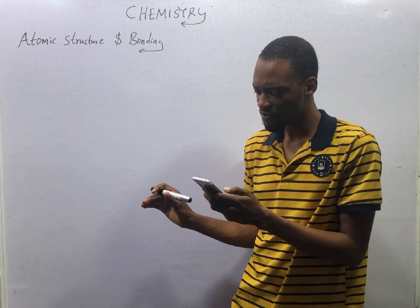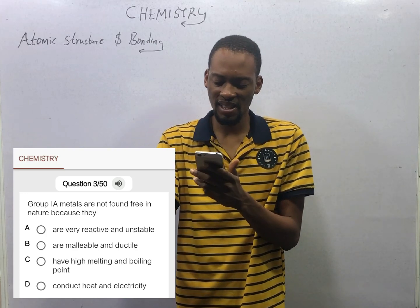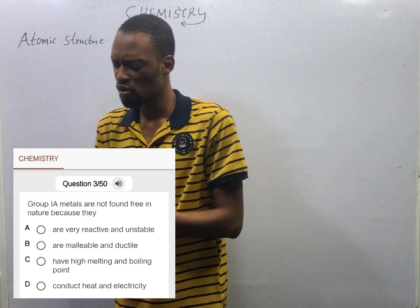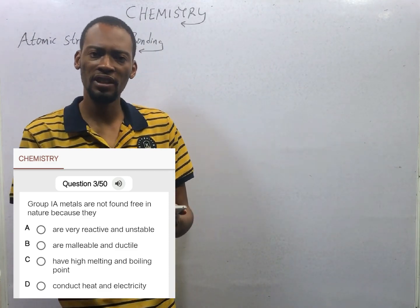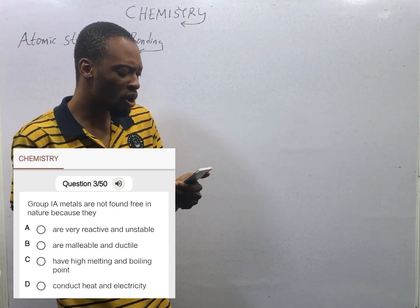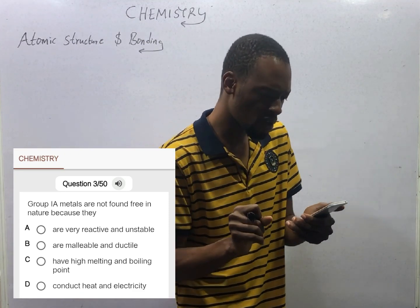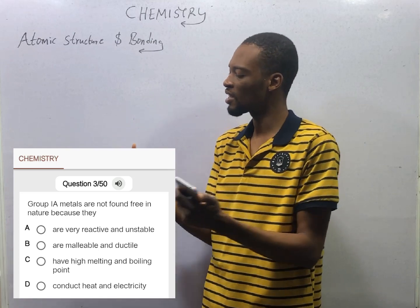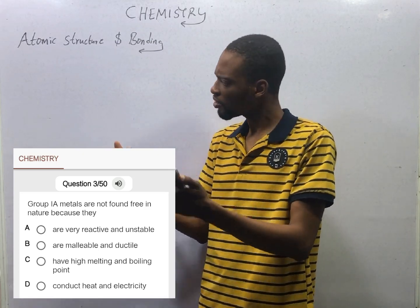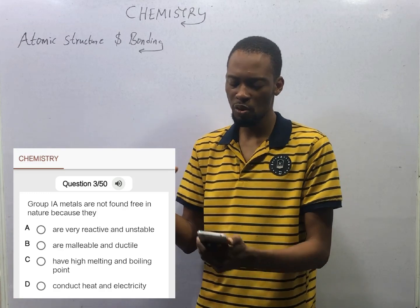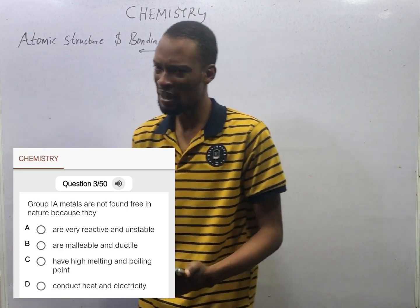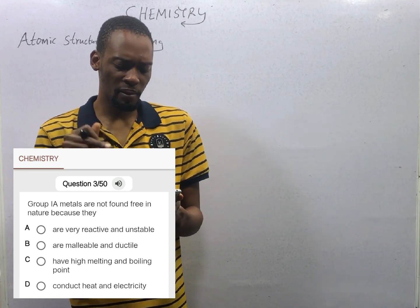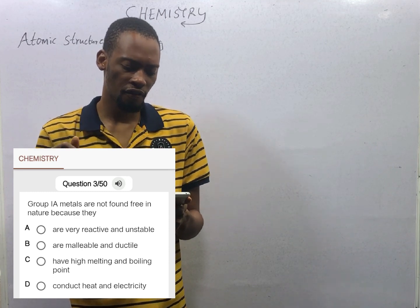The first question is: Group 1A metals are not found free in nature. Why? Is it because they are very reactive and unstable? Is it because they are malleable and ductile? Malleable means they can be beaten into thin sheets; ductile means they can be drawn into wire. These are properties of metals generally, but is that a reason why Group 1A metals are not found free in nature?